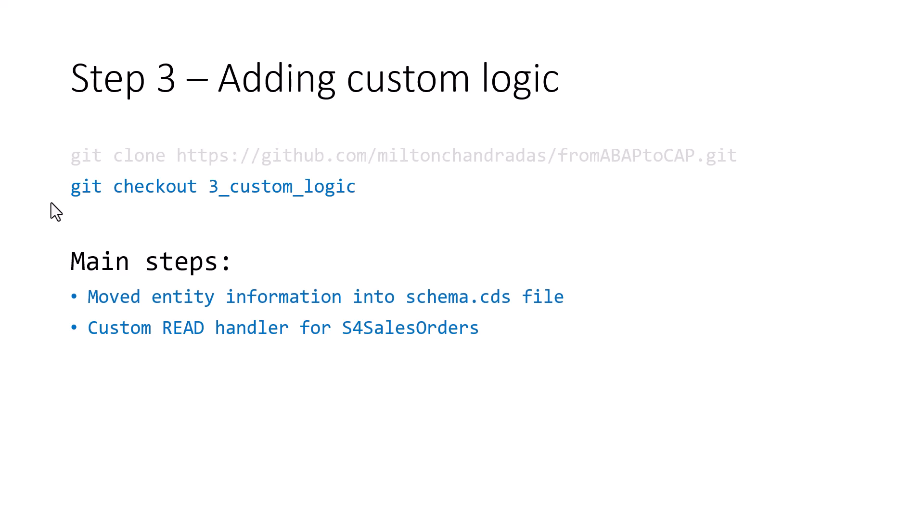Hello, everyone. Welcome to the session on SAP CAP for ABAP developers. In the previous session, we had exposed the Northwind OData service and also the SAP S4 HANA OData service, but we were not able to read from the SAP S4 HANA OData service because we had to provide the API key. So in this session, we will look at the steps on how to create the custom logic and pass in the API key.